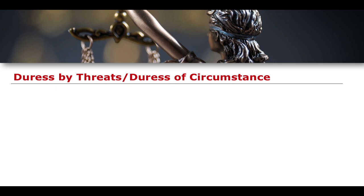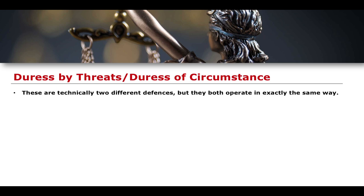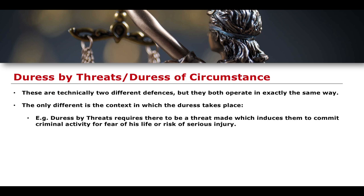Those are examples of duress by threats. You can understand duress by threats very easily: it's essentially 'go and perform this action or I'll kill you, or I'll kill a family member, or I'll do something horrific.' Duress by threats requires that there is a threat made which induces the defendant to commit criminal activity for fear of his or her life, risk of serious injury, or fear of somebody else's life.